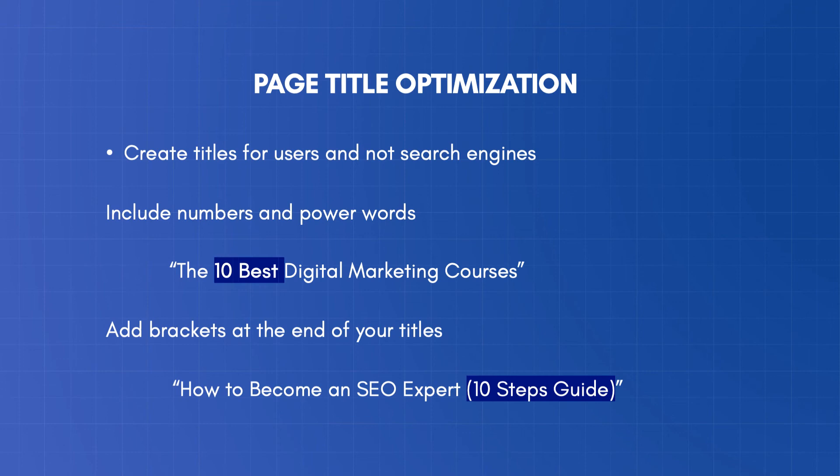Include numbers and power words like best, amazing, incredible, and top. Use negative words like no, without, and stop. Use brackets at the end of your titles. According to studies, titles with brackets have a 33% higher click-through rate than titles without brackets.